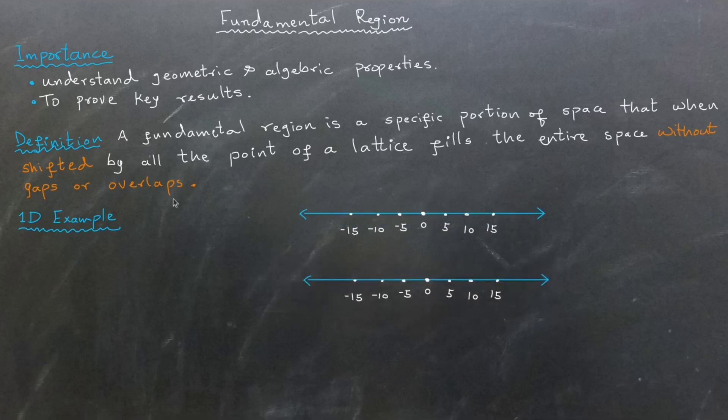The fundamental region for this lattice could be a half-open interval such as from negative 2.5 to positive 2.5, or from 0 to 5. If we take the interval from negative 2.5 to positive 2.5, the lattice point lies at the center of the region. If we use the interval from 0 to 5, the lattice point lies at the boundary.